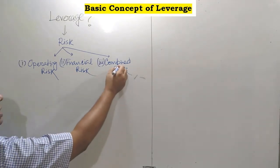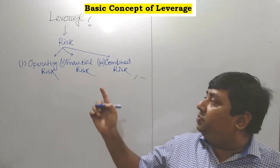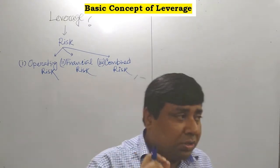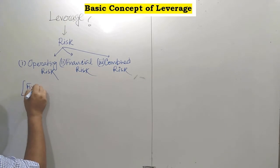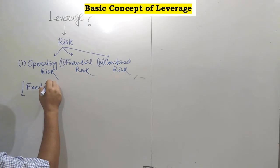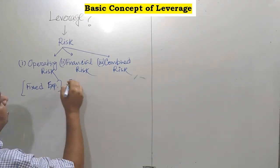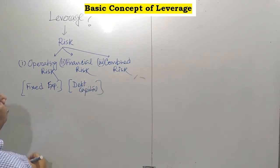How are such risks associated with the business? Once you follow the category of such risks, you can easily understand. Operating risk is mostly associated with your fixed expenses. Financial risk is associated with your debt capital — it is mostly related to your debt capital.